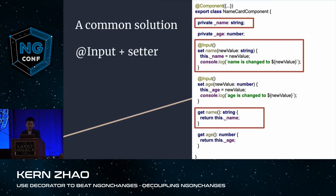Whenever the input property is changed, the setter function takes over and does two things: first, it stores the new value into the private variable; and second, it executes your customized code — like logging 'name is changed'.